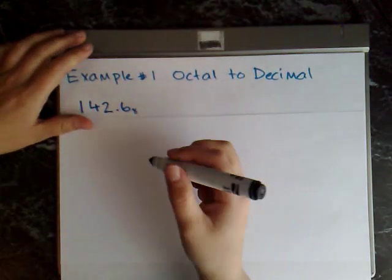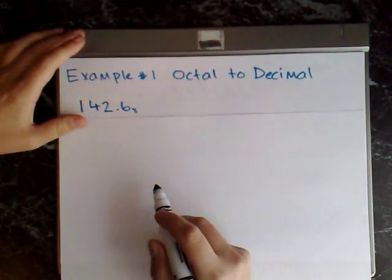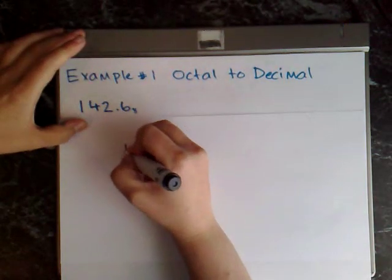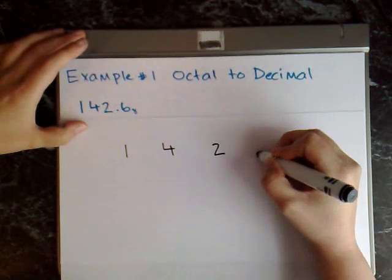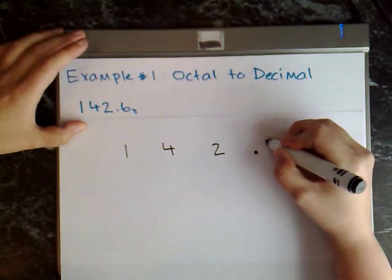So for the first step I just like to write each digit out with a little bit of space between each one. So 1, 4, 2, .6